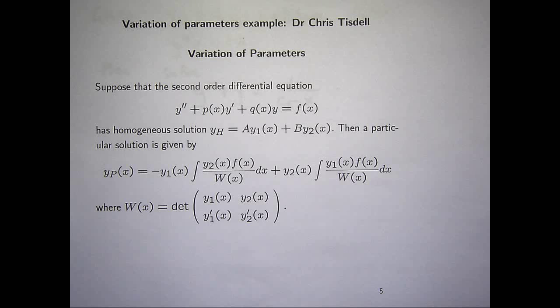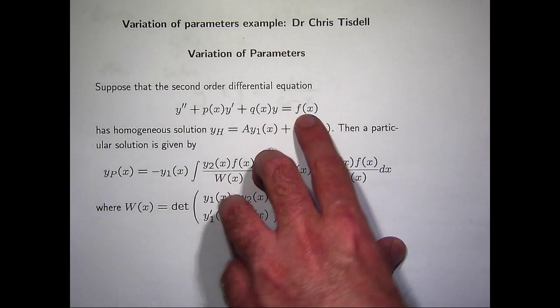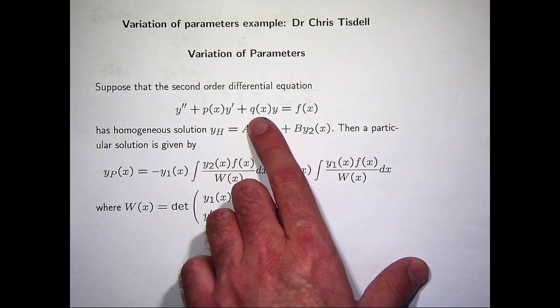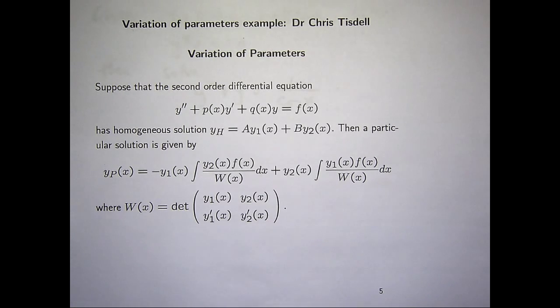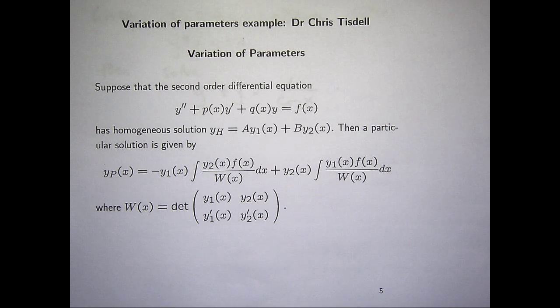So up here, I've got the basic idea of the method. Suppose I have a second-order differential equation inhomogeneous, so p and q are functions of x, they could be constants, and in fact they're the kinds of functions that we've been looking at. f of x is some given function like x squared or something.